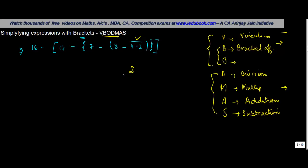What's the next thing? Bracket. So you start removing the brackets. First you remove the parenthesis, which is this bracket. So 8 minus 2 will give you 6 minus 7, minus 14. Then 7 minus 6 is 1 minus 14. We remove the braces now.